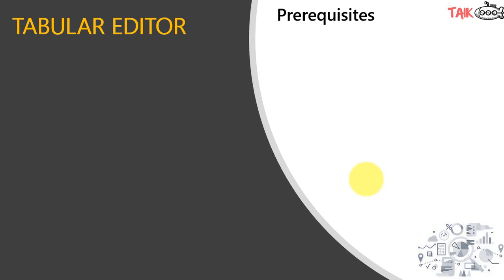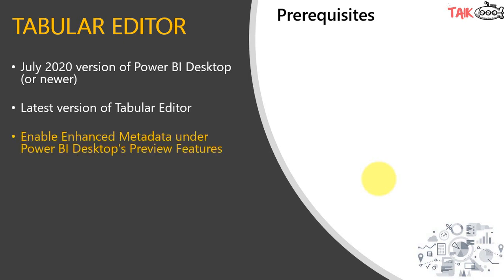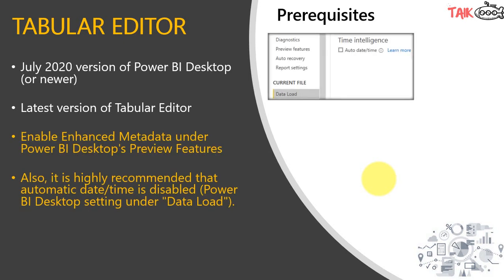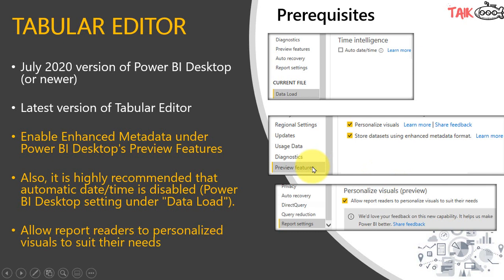Now let's look at the pre-requisites for Tabular Editor. First, you need at least the July 2020 version of Power BI Desktop and the latest version of Tabular Editor. Under Preview Features in Power BI Desktop, you have to enable Personalized Visuals and enable the Store Dataset Using Enhanced Metadata Format option. At the current file level, you have to disable the Time Intelligence Auto DateTime function. In the report settings of the current report, you also have to enable the option to allow report readers to personalize visuals to suit their needs.